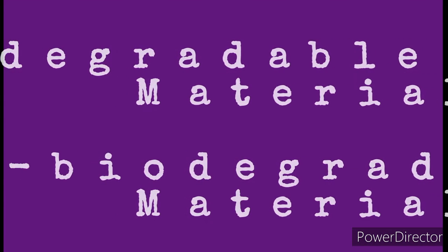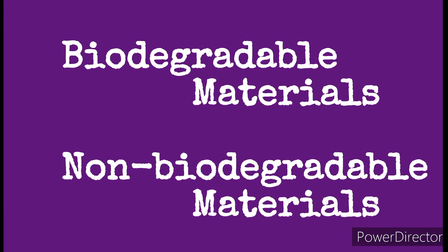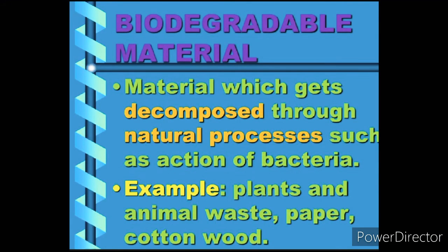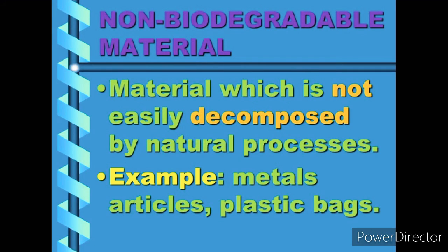On the basis of decomposition, materials can be classified into two types: biodegradable and non-biodegradable materials. A material which can be decomposed by microbes is called a biodegradable material — examples include jute, cotton, paper, and leftover food. A material which cannot be decomposed by microbes is called a non-biodegradable material — examples include plastic, iron, and copper.